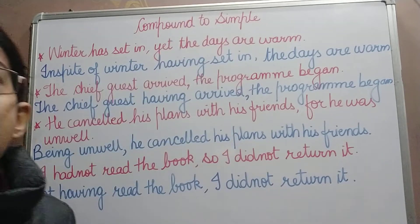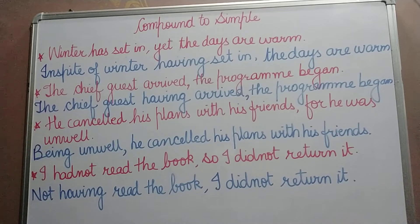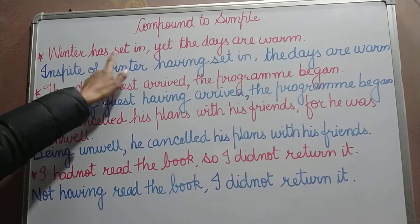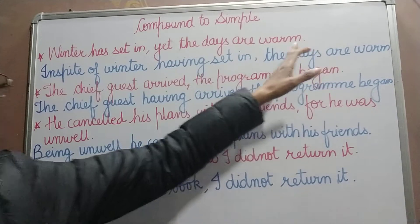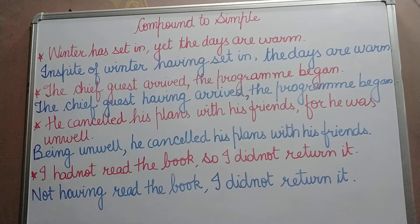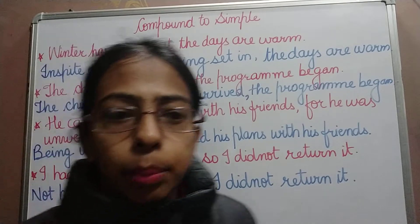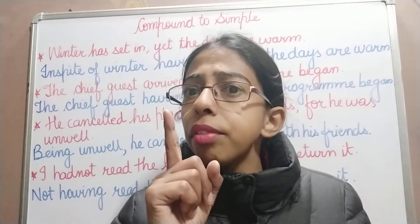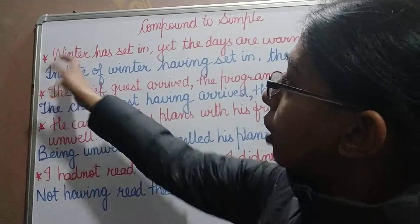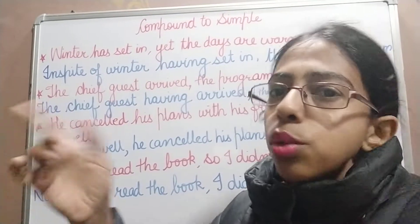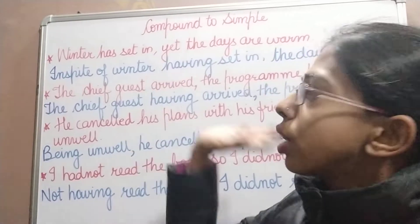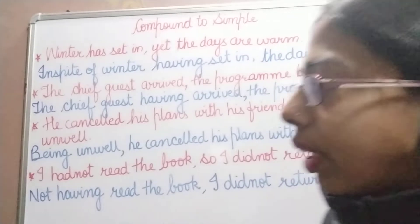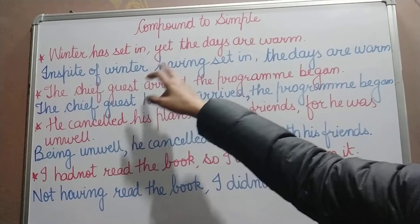Let us take examples. First compound sentence: 'Winter has set in, yet the days are warm.' Winter has set in and the days are warm are joined by the coordinating conjunction 'yet', making it a compound sentence. To change it into a simple sentence, it should have one subject and one finite verb — only one independent clause is allowed — and we must eliminate the conjunction 'yet'.